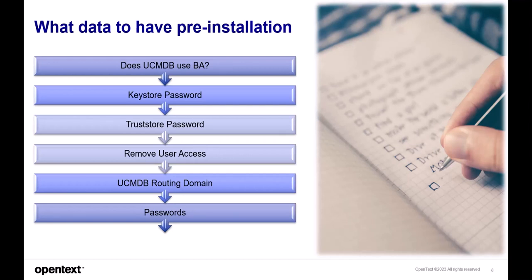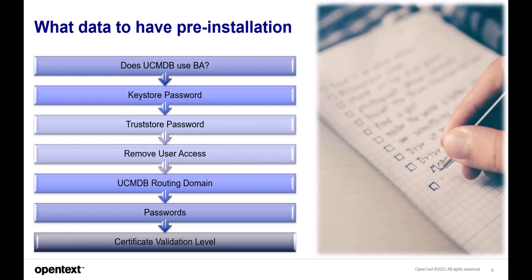Any passwords specified for users — such as the sysadmin user or the Postgres database user — must contain 8 to 16 characters and include at least one of each of the following four character types: uppercase alphabetic, lowercase alphabetic, numeric, and special characters such as colon, slash, dot, underscore, plus, minus, left square bracket, or right square bracket. The certificate validation level also needs to be known: low disables all checks except for the existence of a signed certificate; medium disables the certificate revocation list check but verifies the CA certificate is valid; high requires a valid certificate, a specified certificate revocation list, and that the certificate not appear on that list.